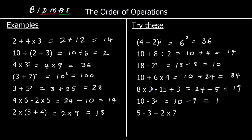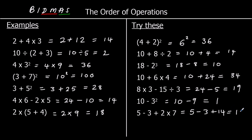And the last one: no brackets, no indices, we've got a multiplication. 2 times 7, which is 14. And then we've got addition and subtraction left — we can just do it left to right. So 5 take away 3 is 2, and 2 plus 14 is 16.